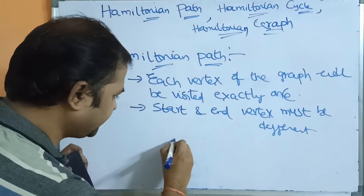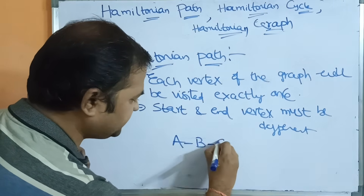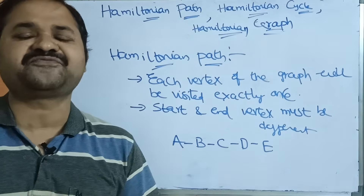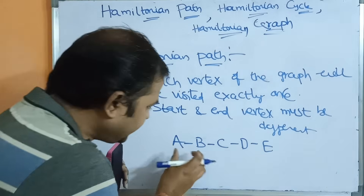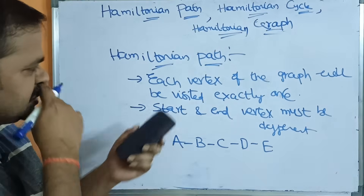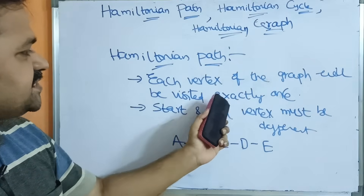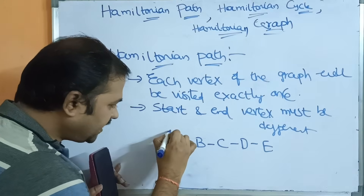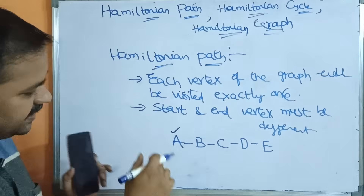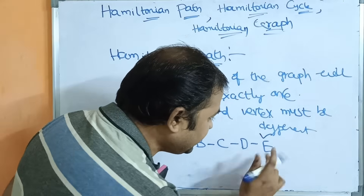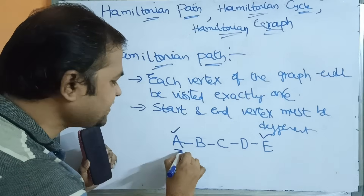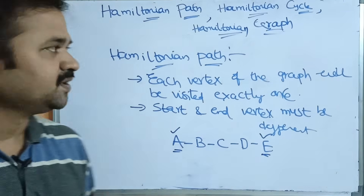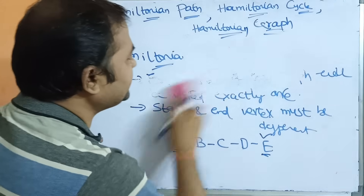For example, let's take a graph with five vertices: A, B, C, D, E. Let the path be A→B→C→D→E. This path starts at vertex A and ends at vertex E. So the starting vertex and ending vertex are different. This is a Hamiltonian path.